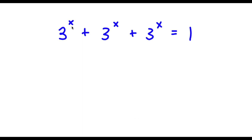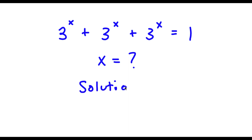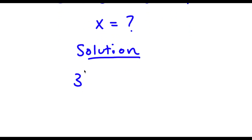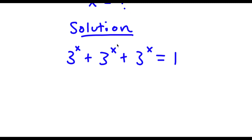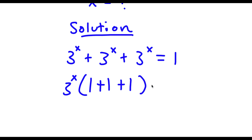Alright, so I have 3 to the power of x plus 3 to the power of x plus 3 to the power of x is equal to 1, and I want to find the value of x. For my solution, I start with that equation, and the first thing I'm going to do is factor out 3 to the power of x from the left-hand side. So I get 3 to the power of x times (1 plus 1 plus 1) equals 1.